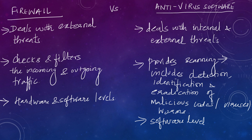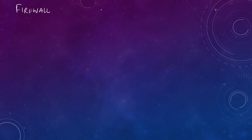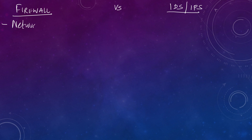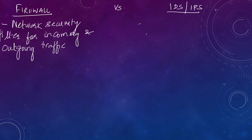Now, how is firewall different from IDS and IPS - Intrusion Detection System and Intrusion Prevention System? Firewall is a network security filter for incoming and outgoing traffic based on predetermined rules. IDS and IPS is a device that inspects traffic, detects it, and classifies it proactively - or stops it based on malicious activity or traffic from an attacker.